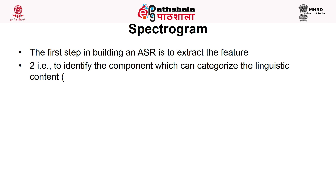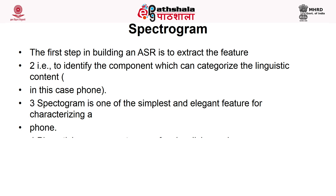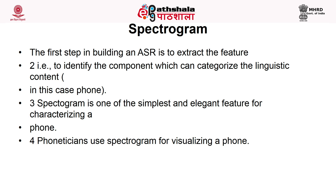One important feature is the spectrogram, which phoneticians use for visualizing a phone. The spectrogram can be extracted using small speech frames or short-duration speech signals, by computing the log FFT squared. The output is your spectrogram. Spectrogram is one of the simplest and most elegant features for characterizing a phone, and most phoneticians use this feature. However, it is very difficult to extract spectral features from a spectrogram if the environment is noisy.